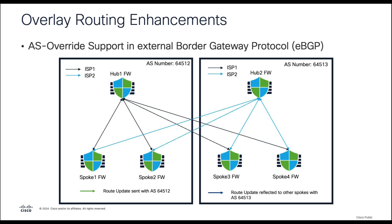The wizard also brings support for AS override. This feature allows spokes in one AS to learn the routes of spokes in the same AS connected to a hub in a different AS — that is, spoke 1 talking to spoke 2. It also allows spokes in one AS to learn routes of spokes in different AS connected to a hub within their own AS — that is, spoke 1 talking to spoke 3 or spoke 4.